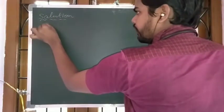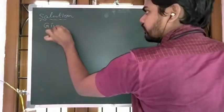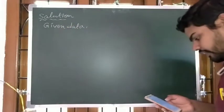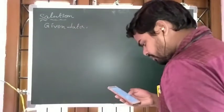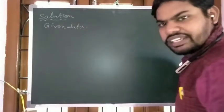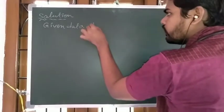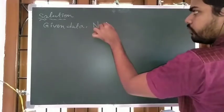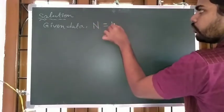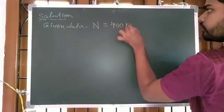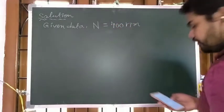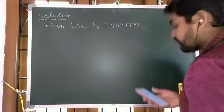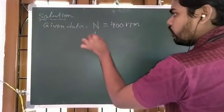Given data: shaft running at 400 rpm, so N is equal to 400 rpm. And it transmits 10 kilowatt power, so P is equal to 10 kilowatt.